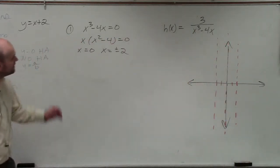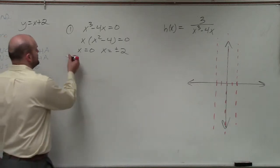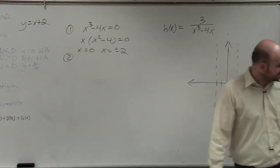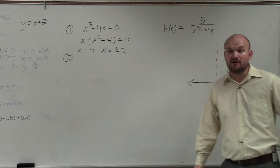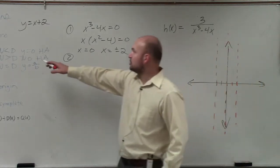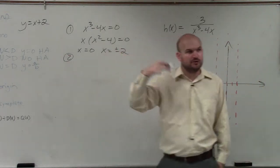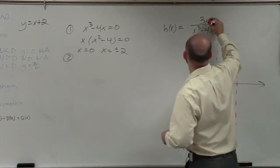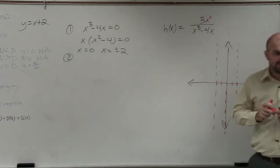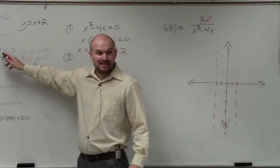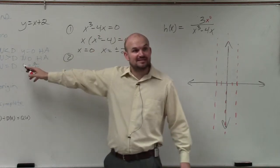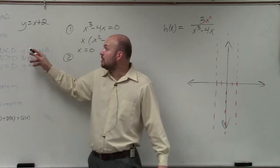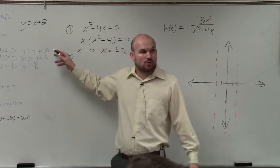The next thing, step number two, is to identify your horizontal asymptotes. For horizontal asymptotes, you look at the degree of the numerator and the denominator. The degree in the numerator is 0. n represents the degree in the numerator, d represents the degree in the denominator. When the degree in the numerator is less than the degree in the denominator, y equals 0 is your horizontal asymptote.